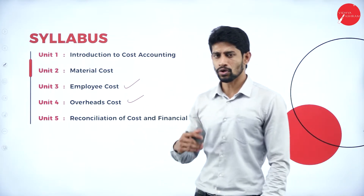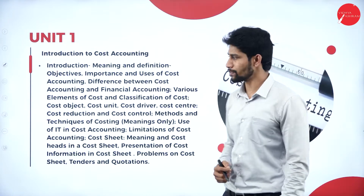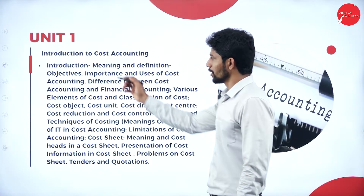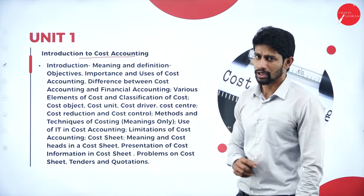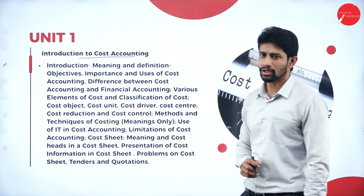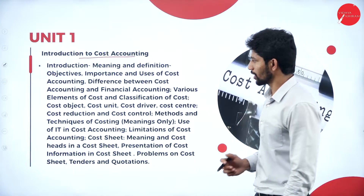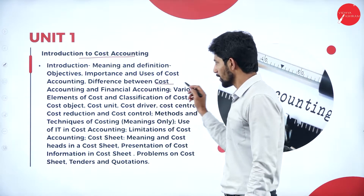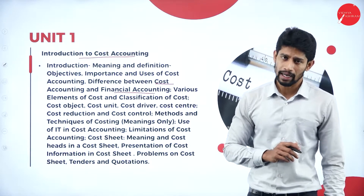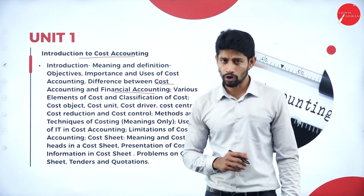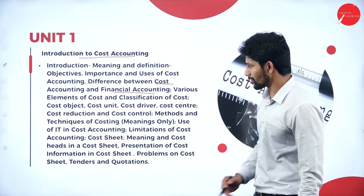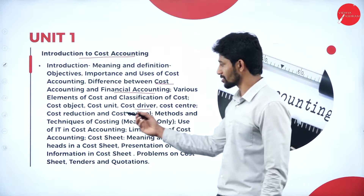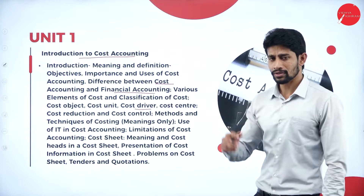Looking at each chapter: Unit One deals with Introduction to Cost Accounting. In this unit we are going to know the meaning of cost accounting, definition, objectives, importance and uses of cost accounting, difference between cost accounting and financial accounting, various elements of cost, and classification of cost, cost object, cost unit, cost driver, cost center, cost reduction and cost control.